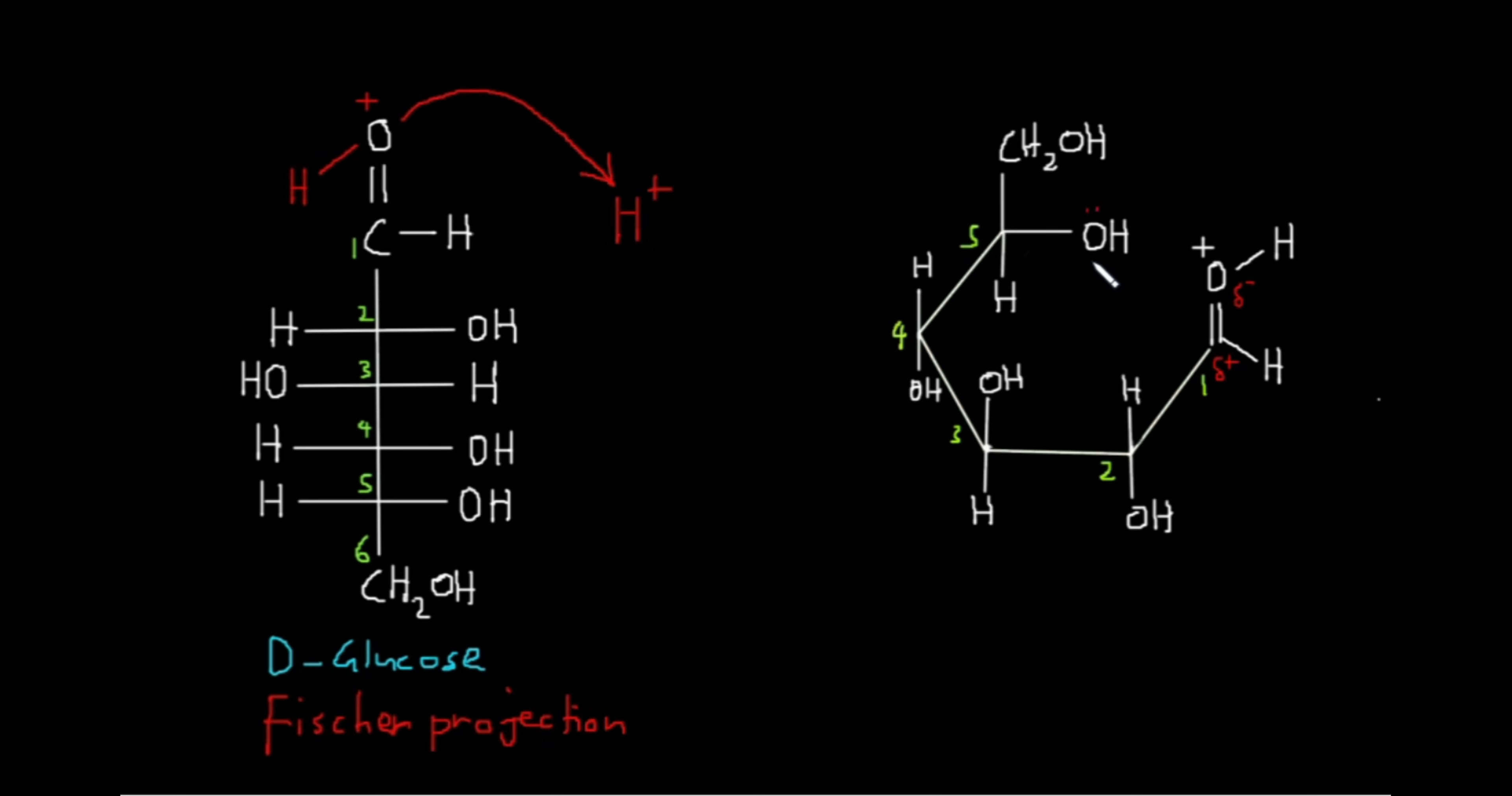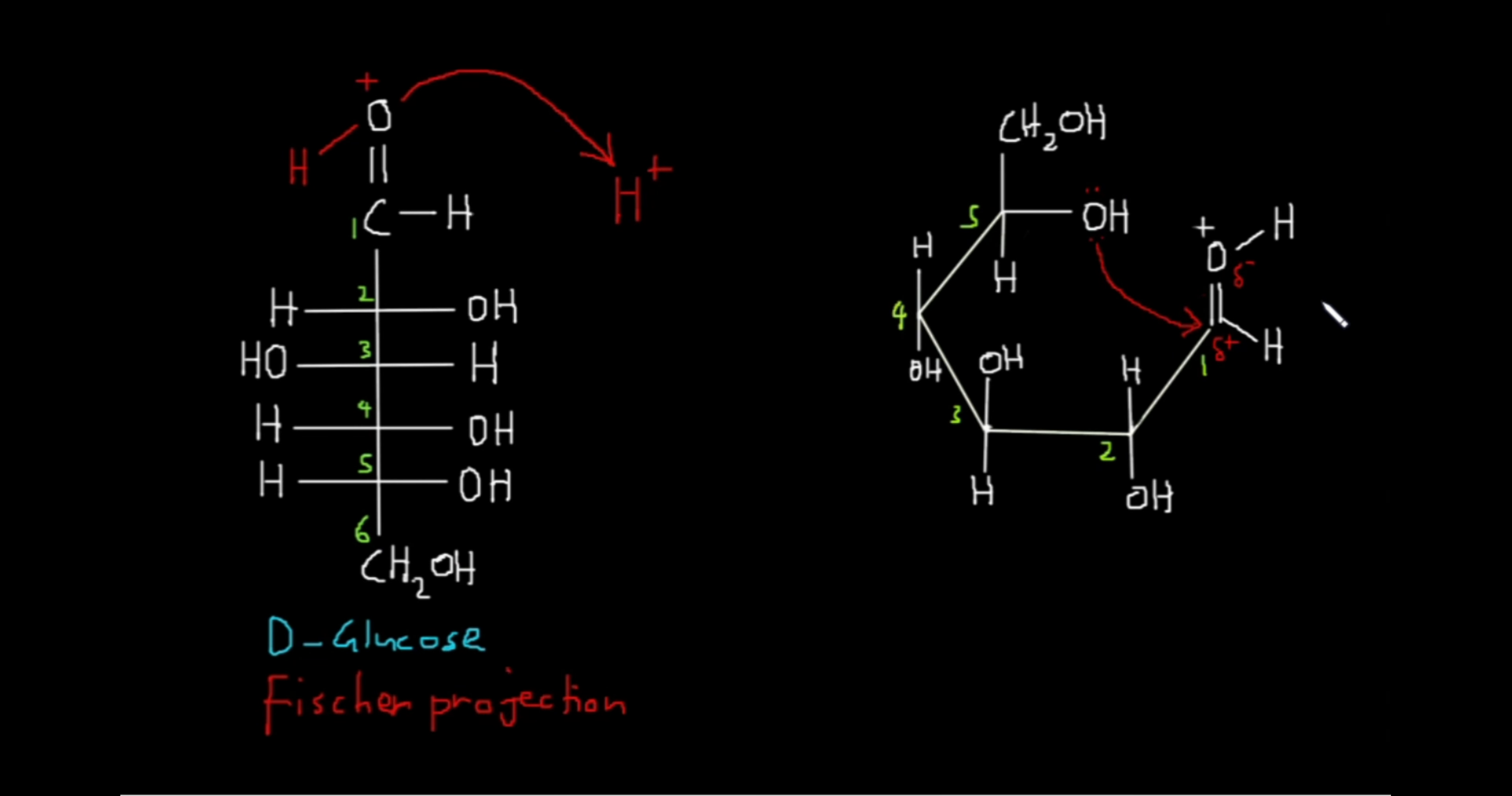In this hydroxyl group that is bonded to the fifth carbon atom, this oxygen has two lone pairs of electrons. It has six electrons in its outer shell. It uses one electron to bond with this hydrogen and the other electron to bond with this carbon atom, so it's left with two lone pairs. These two lone pairs will attack the partially positive carbon atom here.